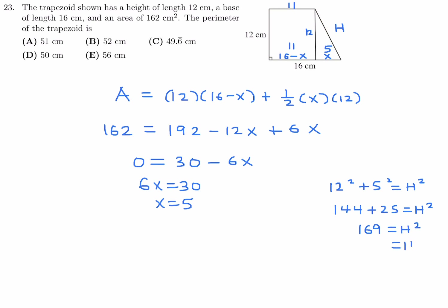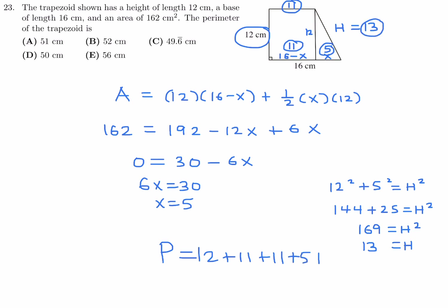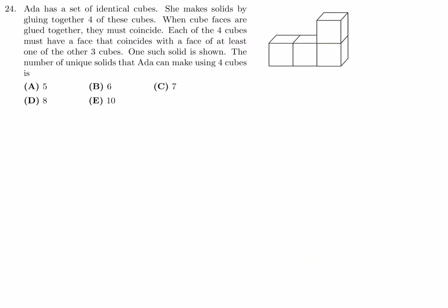So 144 plus 25 equals 169, meaning h equals 13. Now we have all the sides: the bottom base is 16, the top is 11, the height side is 12, the slant is 13. Wait — the perimeter uses the outer sides: 11 plus 12 plus 5 plus 13 plus 11 equals 52. The perimeter is 52, which is choice B.